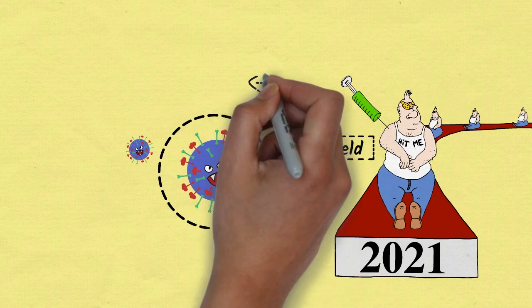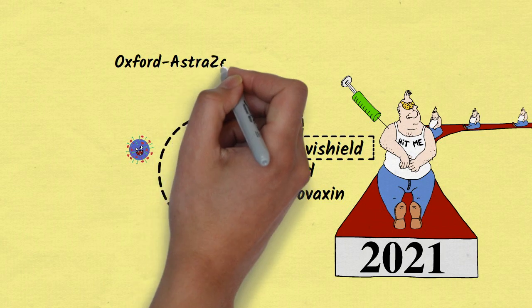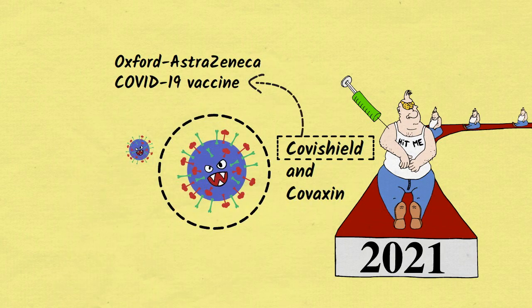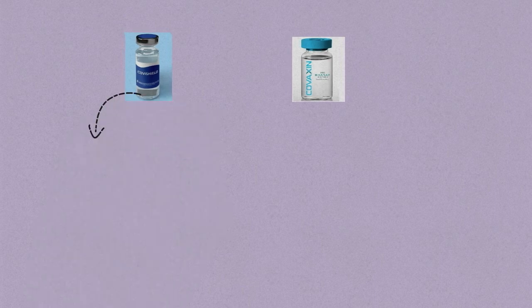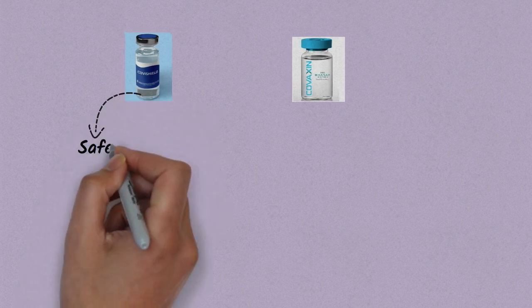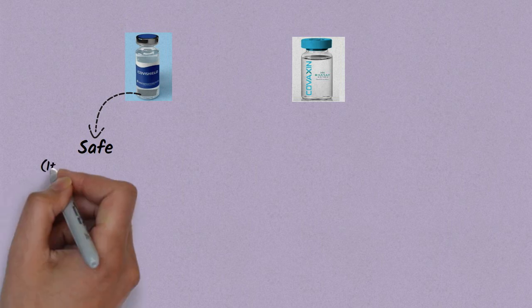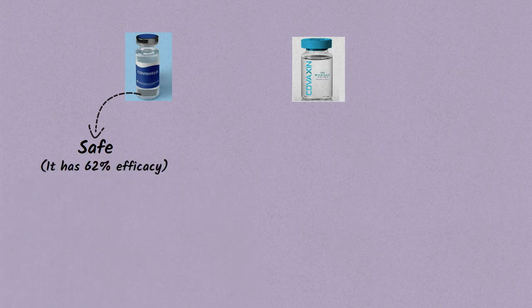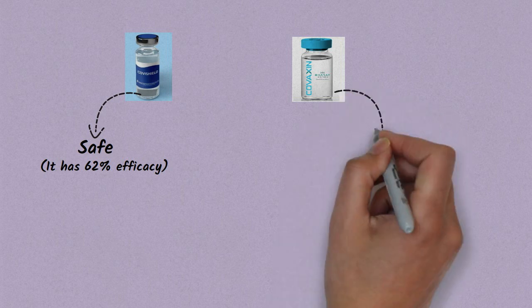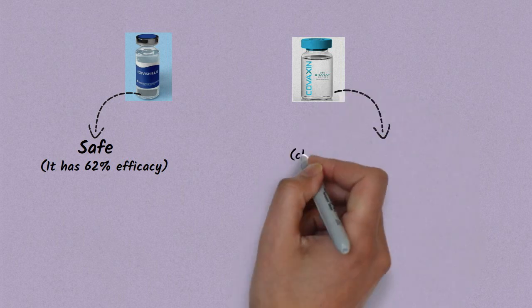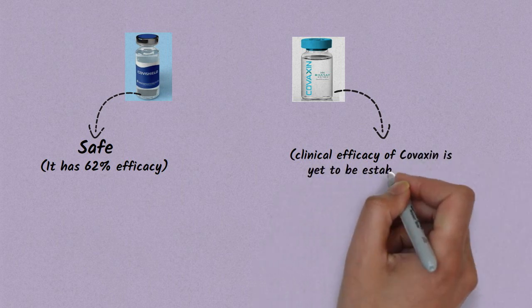Covishield is nothing but a local version of the Oxford-AstraZeneca COVID-19 vaccine. The Oxford-AstraZeneca COVID-19 vaccine is proven to be safe with no major side effects reported throughout the human trials. It has 62% efficacy in the trials when full doses were given to participants. The clinical efficacy of Covaxin is yet to be established.